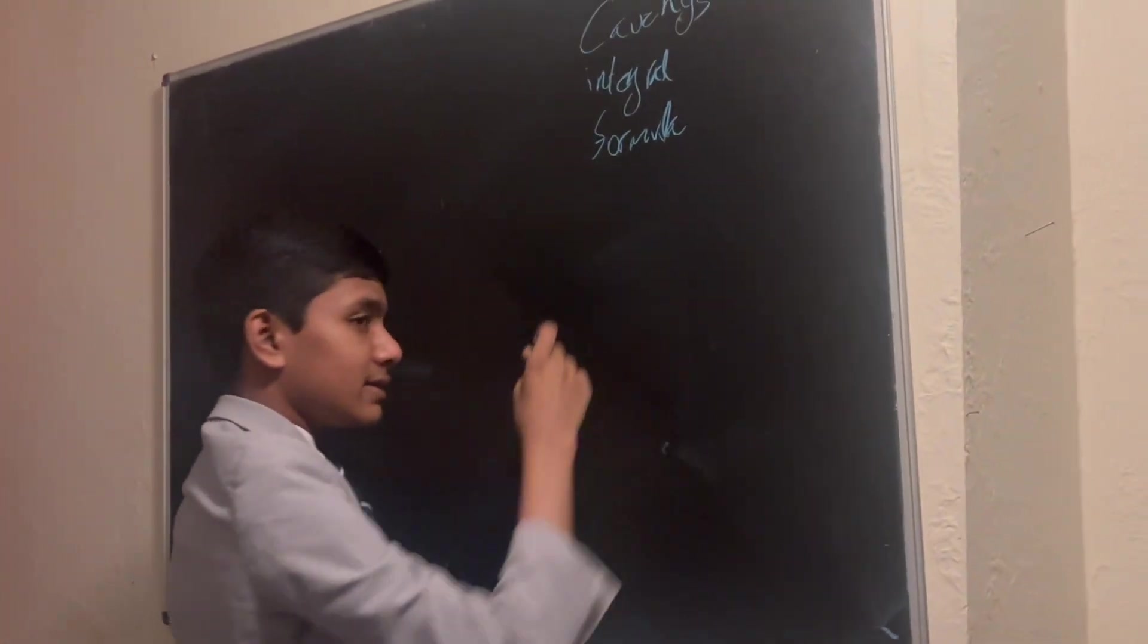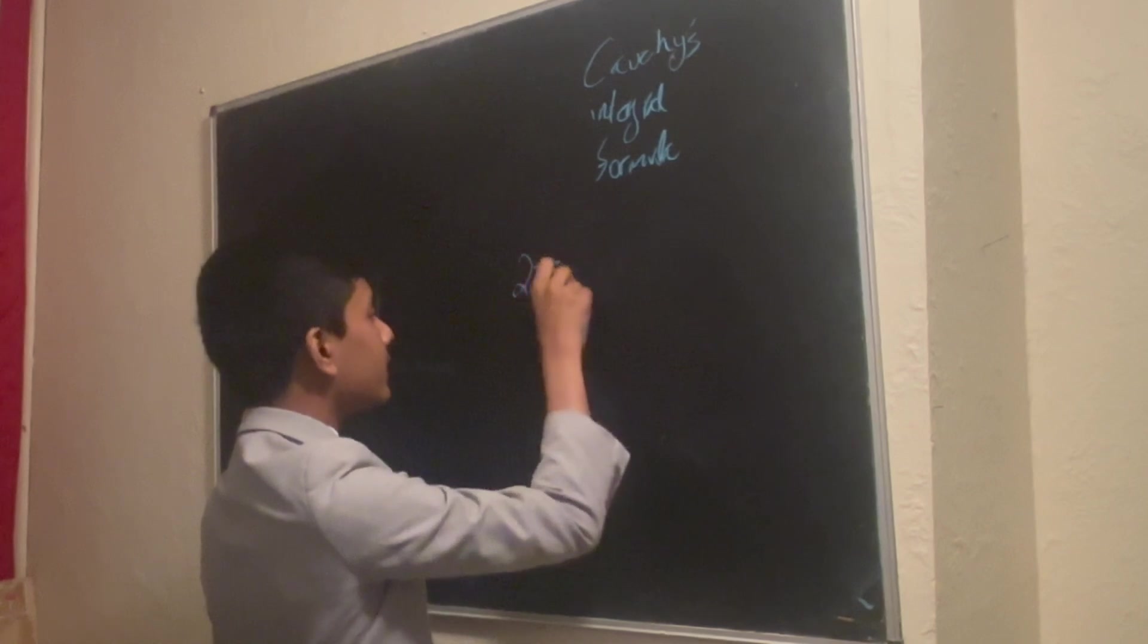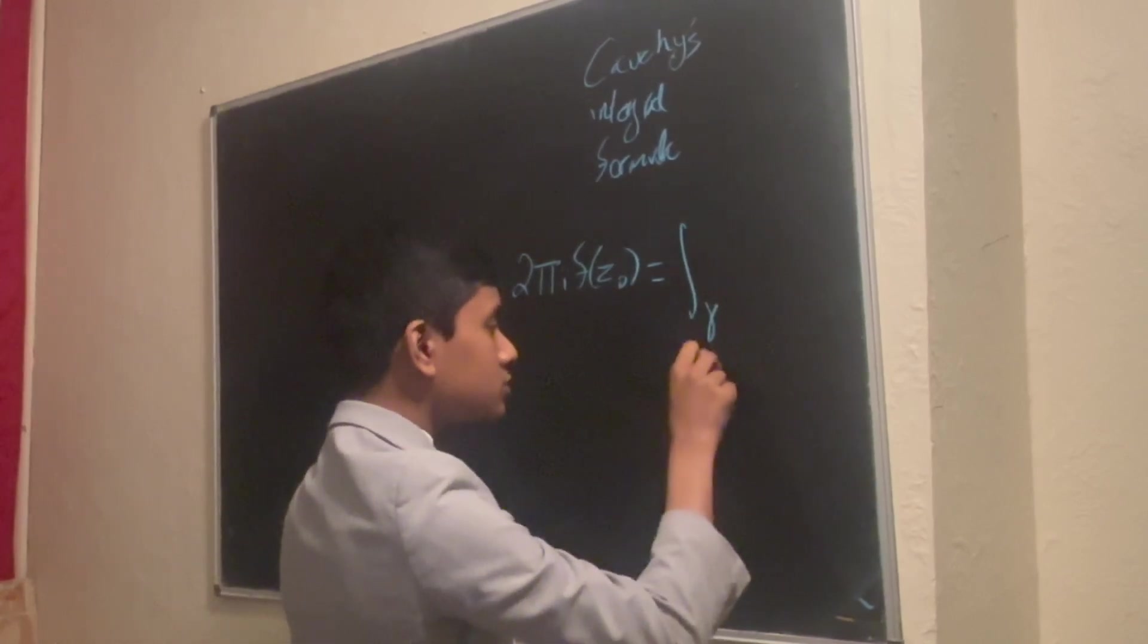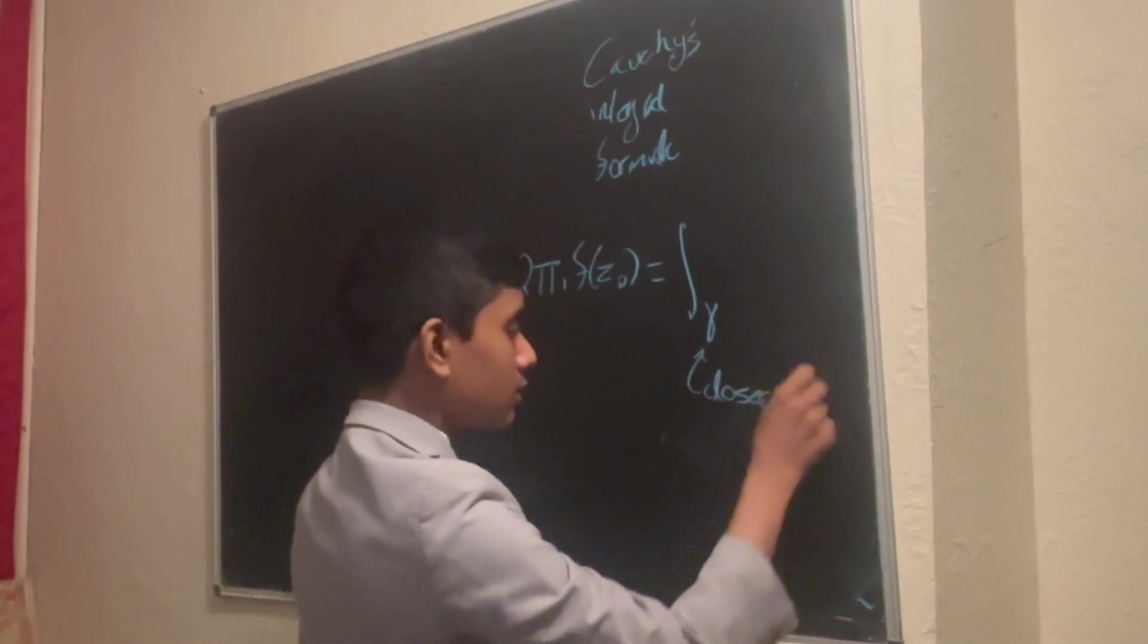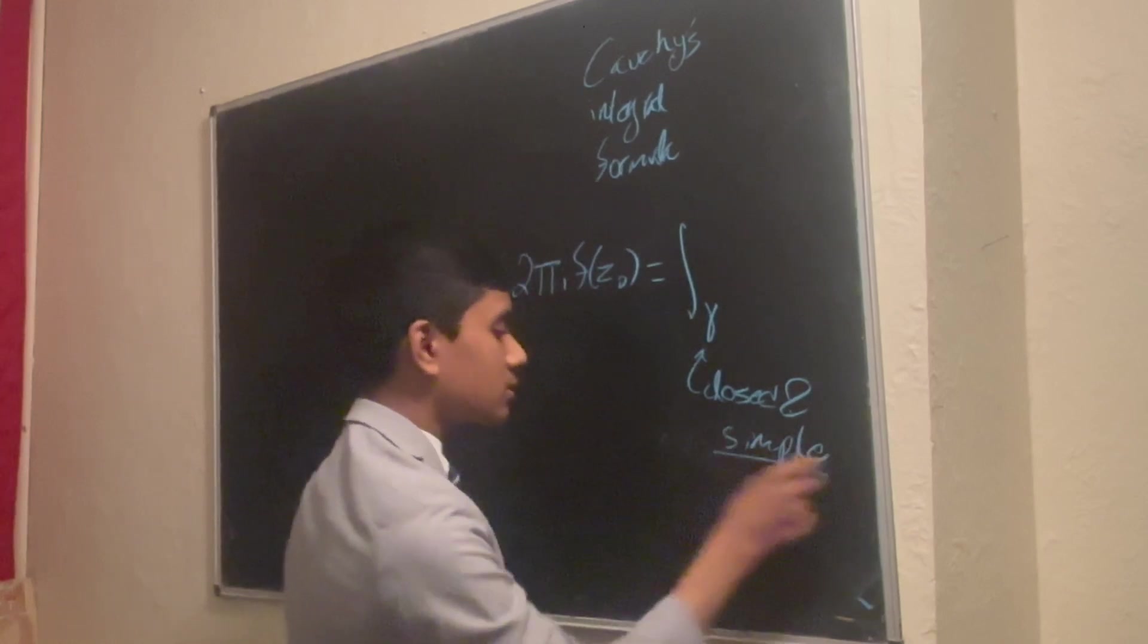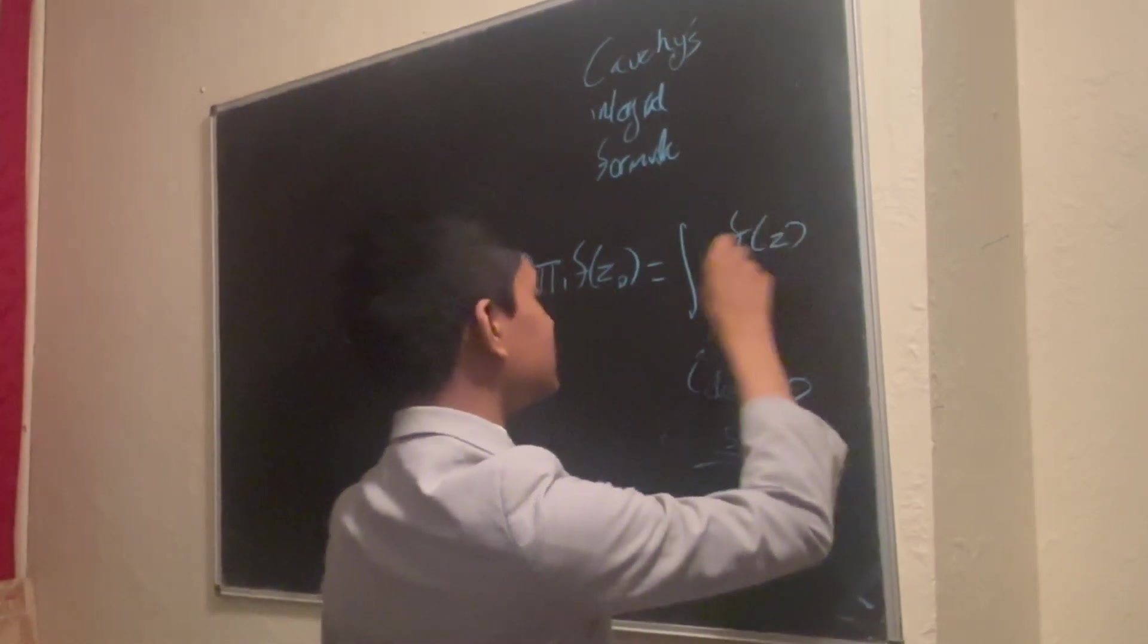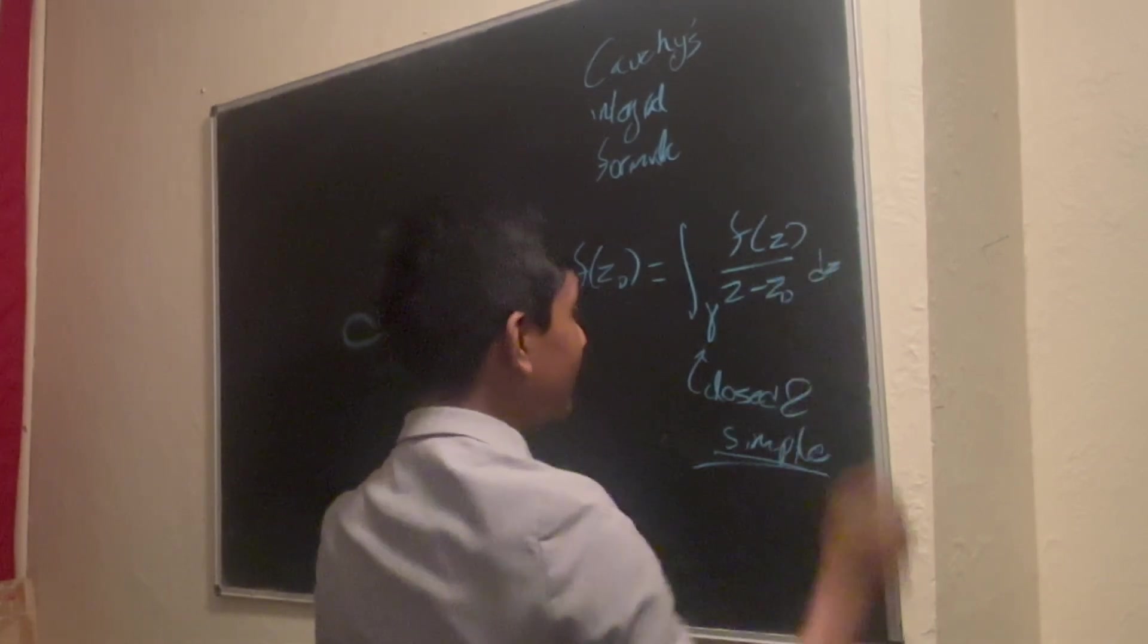Well, it tells us that, this is pretty unbelievable, 2 pi i f of z0 is equal to the contour integral over any closed curve, closed and simple, which means it's not self-intersecting other than at the endpoints, is the integral over this closed and simple contour of f of z divided by z minus z0 dz. That's right.